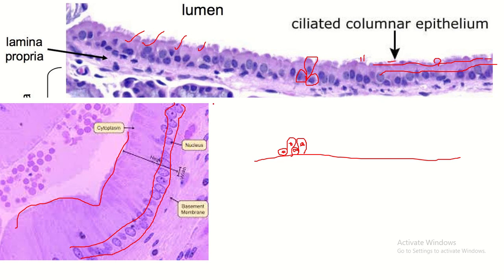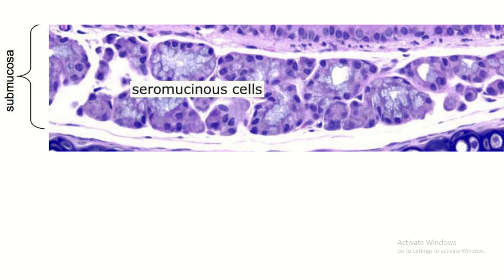The lamina propria contains loose connective tissue. You can see that the number of cells is greater in loose connective tissue and the extracellular matrix is less. The term lamina propria is frequently used in histology and refers to loose connective tissue which contains a large number of cells but a lesser amount of extracellular matrix.